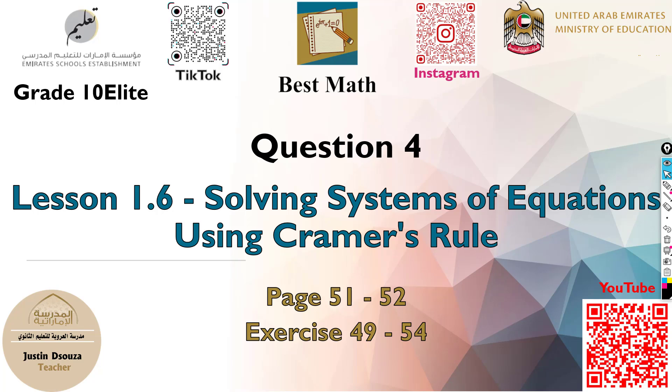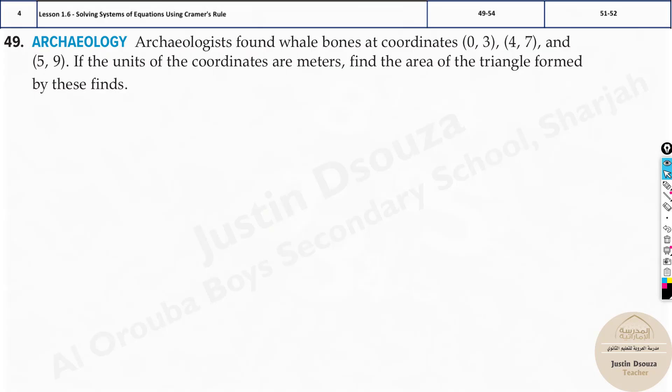Question 49 is to solve systems of equations using Cramer's rule. Our first real world problem is to find area. The archaeologist found whale bones at these coordinates. If the units of the coordinates are meters, find the area of the triangle formed by these finds.